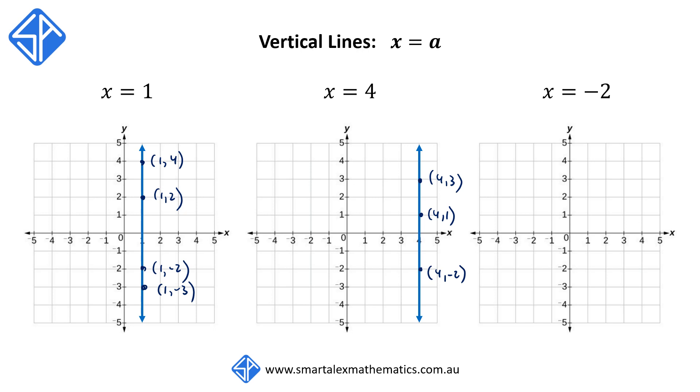And the last example, x is equal to negative 2, by the same reasoning, will be a vertical line through x is equal to negative 2.